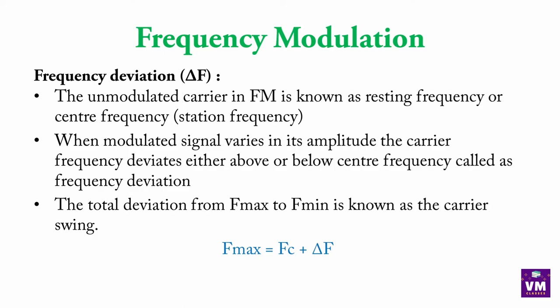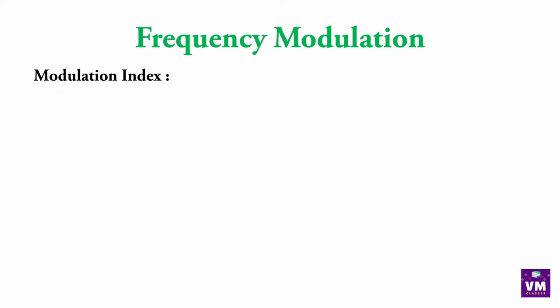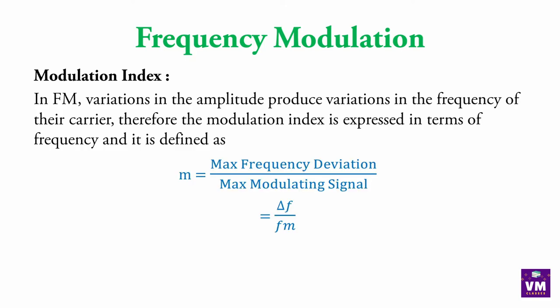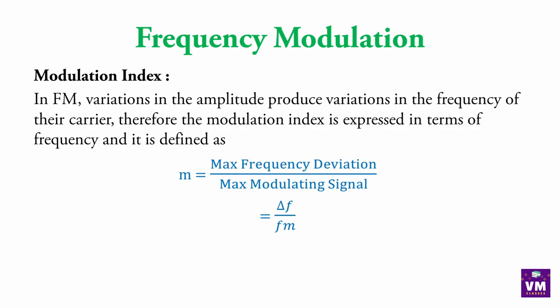F_max = F_c + ΔF, aur F_min = F_c − ΔF. Modulation index in frequency modulation: variation in the amplitude produces variation in the frequency of the carrier. Therefore, the modulation index is expressed in terms of frequency and is defined as m = ΔF / F_m, that is, maximum frequency deviation upon maximum modulating signal frequency.